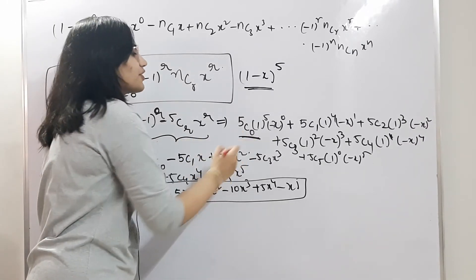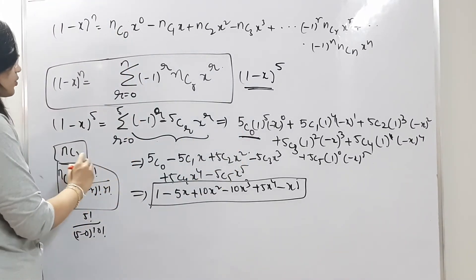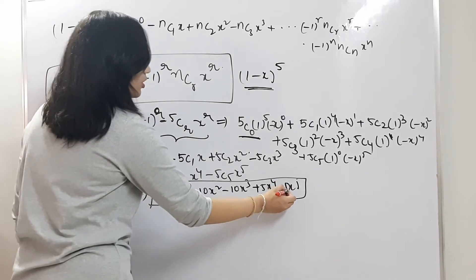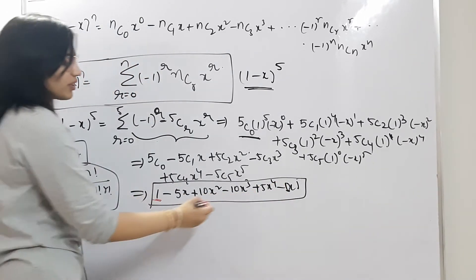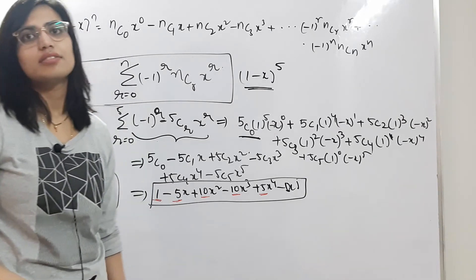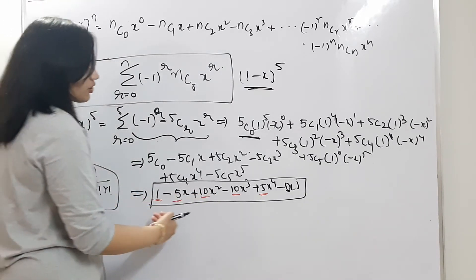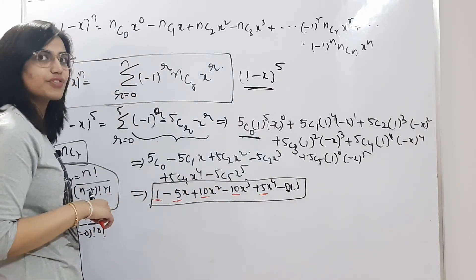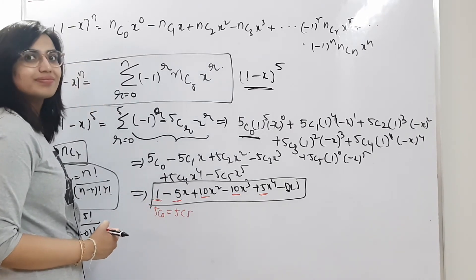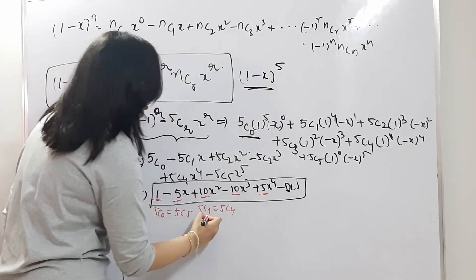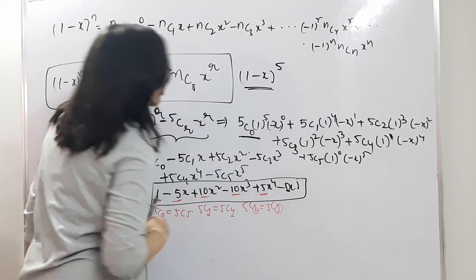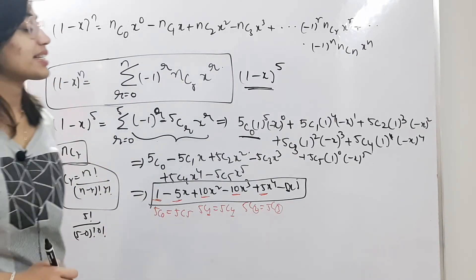These coefficients are easy to identify using the formula nCr. Notice the equidistant property: the coefficient from the right side equals the coefficient from the left at the same distance. So 5C0 = 5C5, 5C1 = 5C4, and 5C2 = 5C3. This confirms the rule nCr = nC(n-r). This is how you expand using binomial theorem.